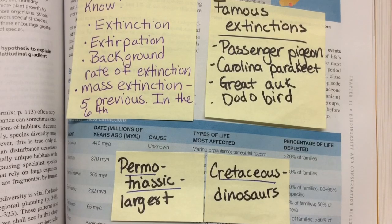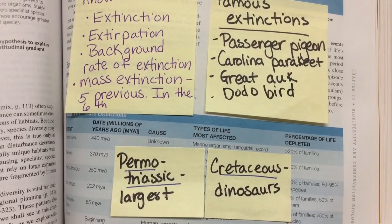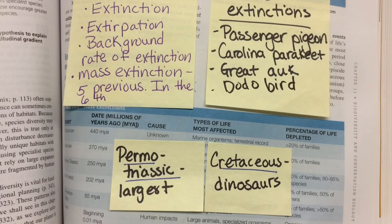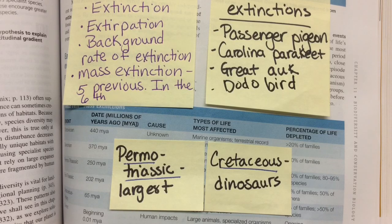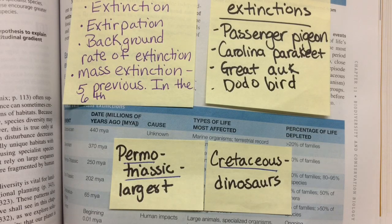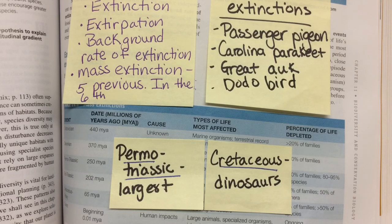Famous extinctions: the passenger pigeon used to be numerous and then we hunted them. We now know the passenger pigeon naturally goes through population declines and increases, but the problem is it was going through a natural decline at the same time it was being hunted by humans — a combination of the two. The Carolina parakeet is another famous extinction, along with the great auk and the dodo bird. Know those famous extinctions.